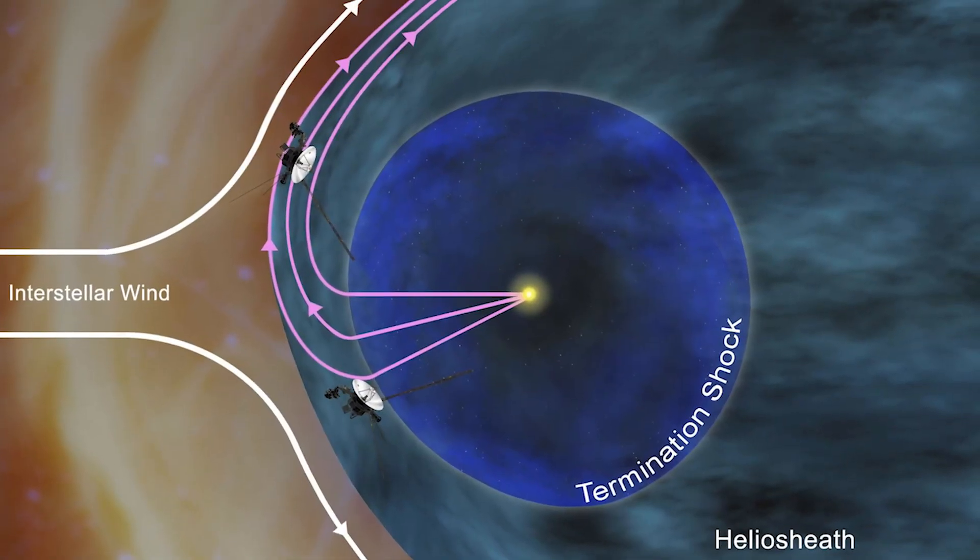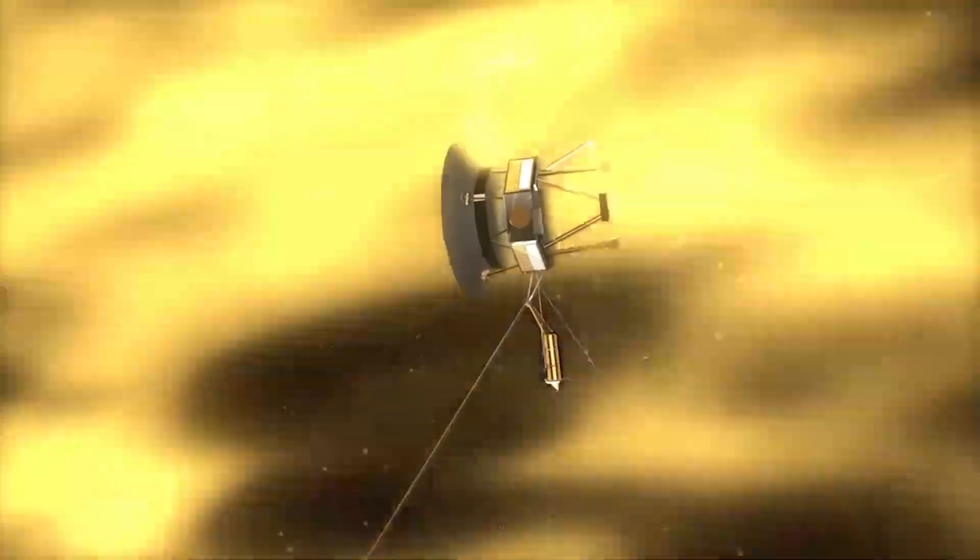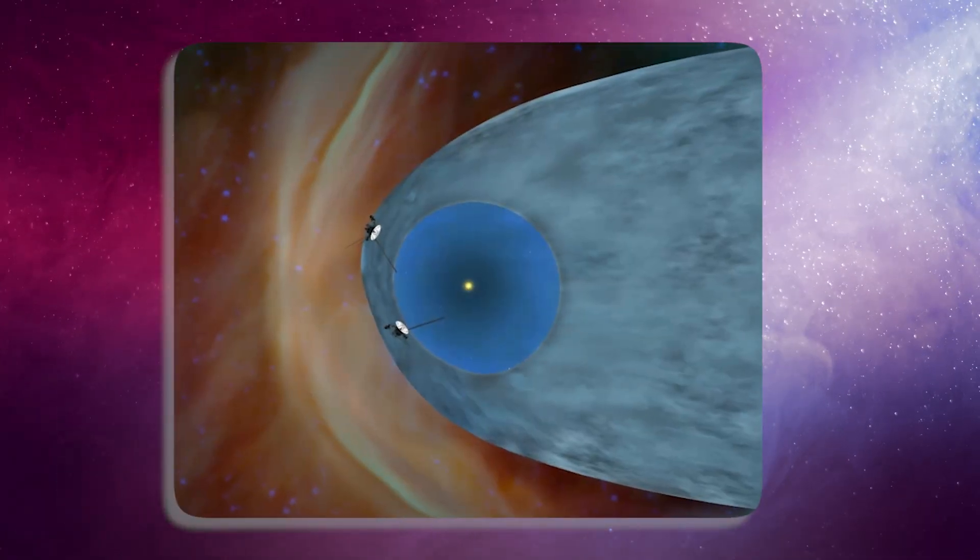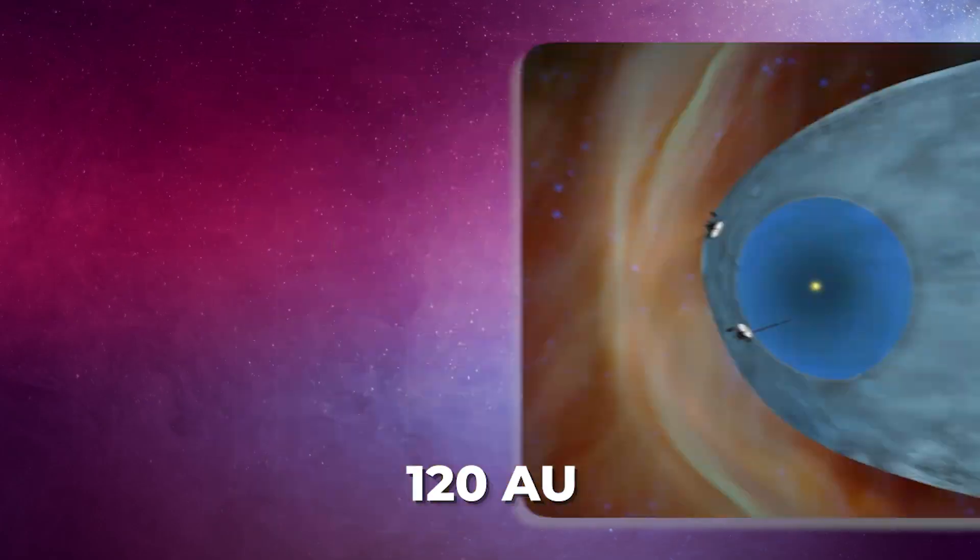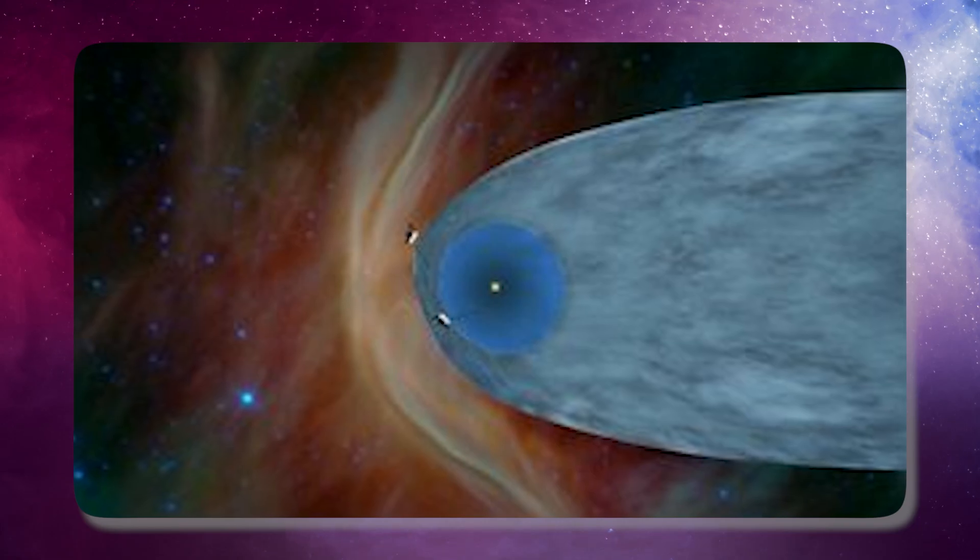However, a perplexing puzzle emerged as no significant shift in the ambient magnetic field direction was observed. Voyager 2 mirrored these findings, reaching the Heliopause at 120 AU without detecting expected magnetic field changes.